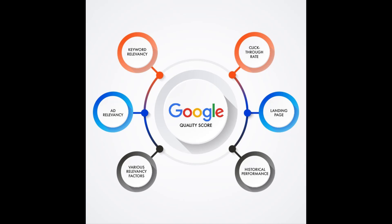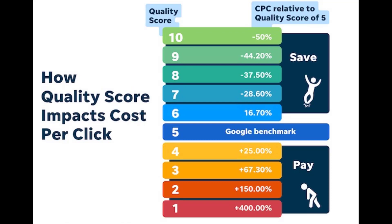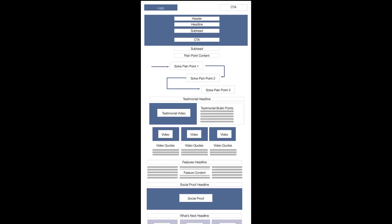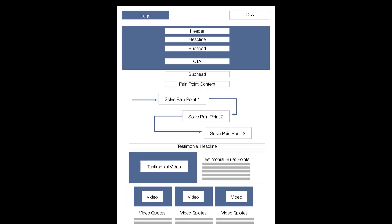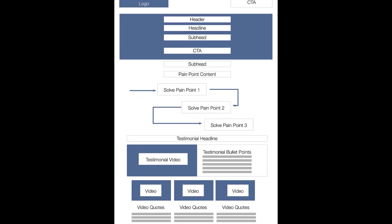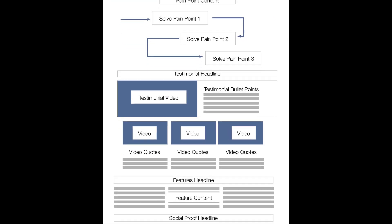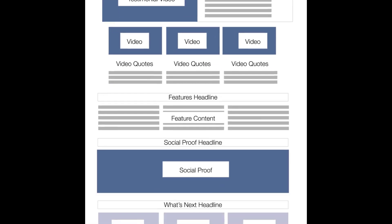Advertising platforms use a similar algorithm to determine your quality score — an arbitrary score given to each page based on how it relates to the keyword. This helps advertising platforms keep irrelevant information off certain searches, but it also allows them to artificially inflate the price of a click. The code structure for these paid landing pages is similar to the SEO structure, with a few major differences.